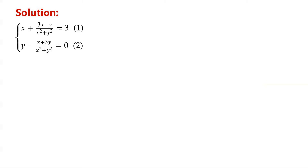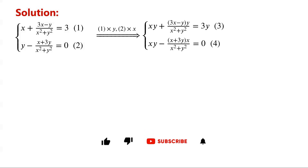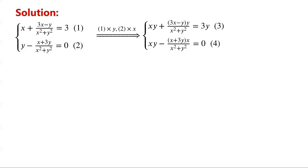So multiplying equation 1 by y, and multiplying equation 2 by x, the system of equations can be simplified. The system of equations becomes: xy plus (3x minus y)·y over (x squared plus y squared) equals 3y, and xy minus (x plus 3y)·x over (x squared plus y squared) equals 0.